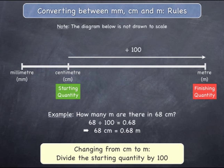And if you are changing a quantity from centimetres to metres, you must divide the starting quantity by one hundred to get an equivalent quantity in metres, as shown.